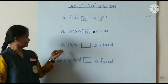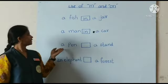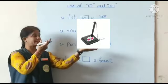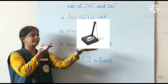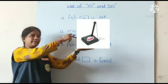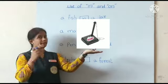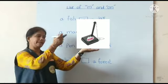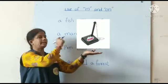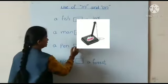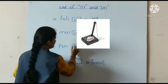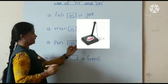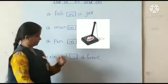Next example. A pan in a stand. Where is the pan, children? A pan is in a stand. We have to write here 'in'.